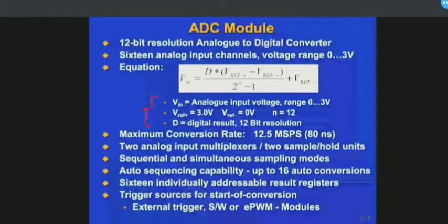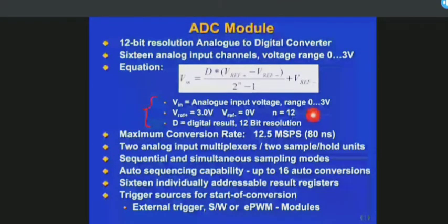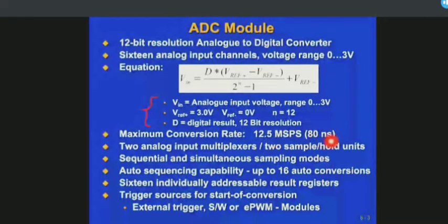The maximum conversion rate is 12.5 mega samples per second, which is 80 nanoseconds. This means once you give inputs to your ADC, it takes 80 nanoseconds to convert a single sample into the digital domain. So in one second, it can convert 12.5 million samples. For one second, it takes 80 nanoseconds to convert a single sample.